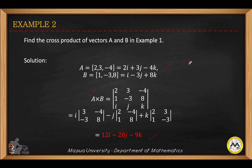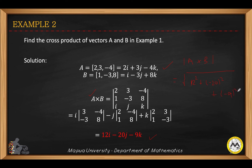So the cross product is the vector (12, -20, -9). To get the magnitude of the cross product, we take the square root of the sum of the squares of its components: the square root of 12 squared plus 20 squared plus negative 9 squared. You may use a calculator to compute the magnitude.